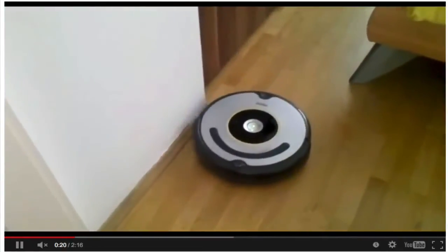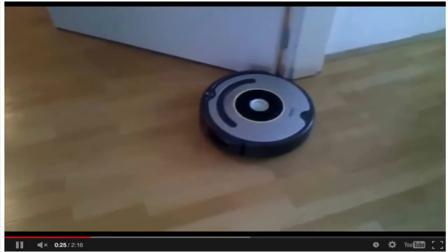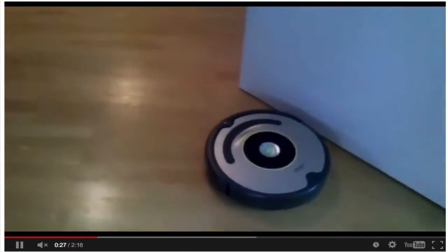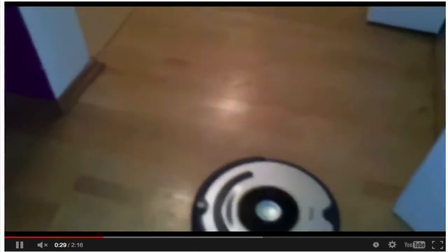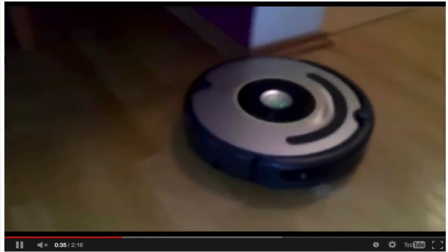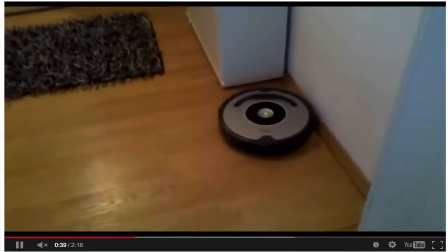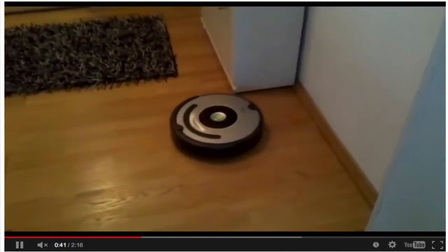Sometimes they come across a particularly dirty spot. They stop and spin in place until that spot is clean and then go back to wandering around. Eventually, the battery runs low, in which case the robot makes a beeline back to its home charger and turns itself off.